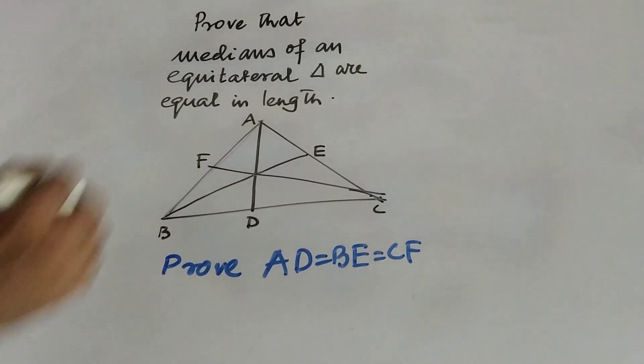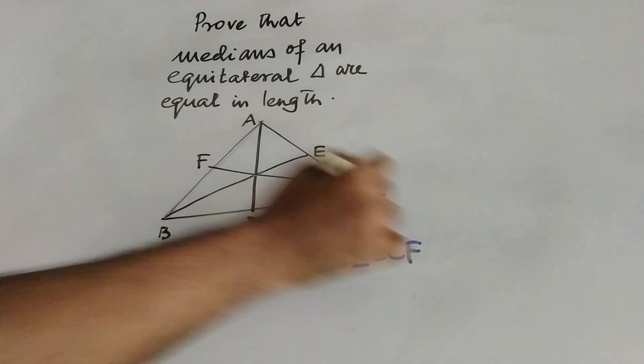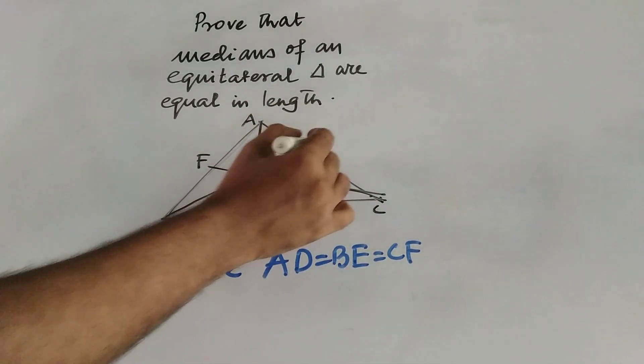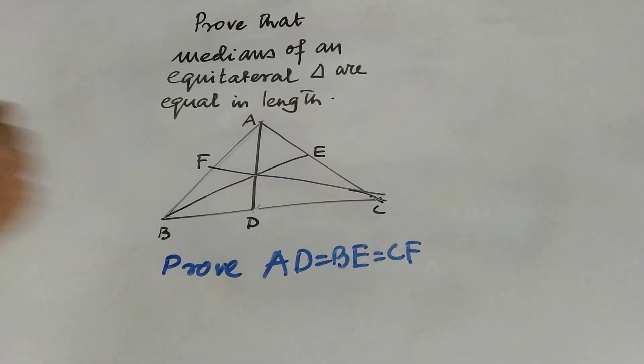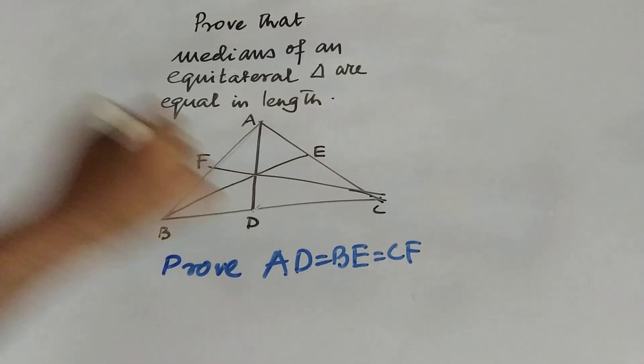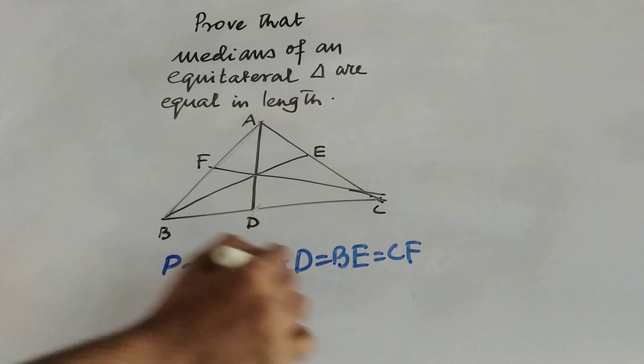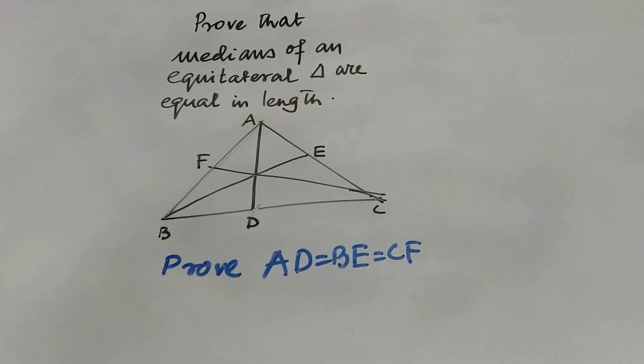There will be three medians of a triangle. I am considering ABC as an equilateral triangle. D is the midpoint of BC, E is the midpoint of AC and F is the midpoint of AB. So, if I connect the opposite vertex with the midpoint of the opposite side then AD equal to BE equal to CF, that is we have to prove.